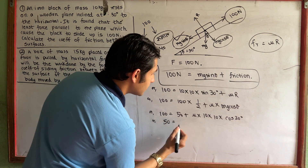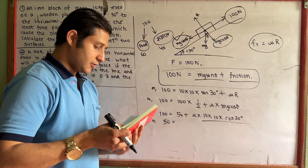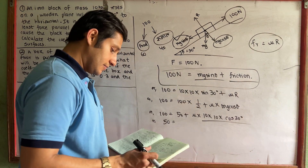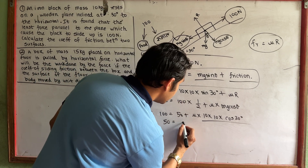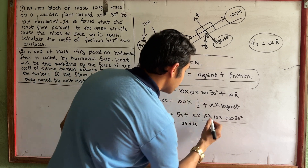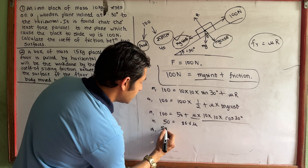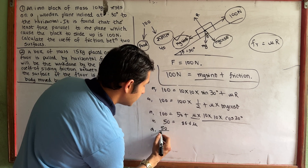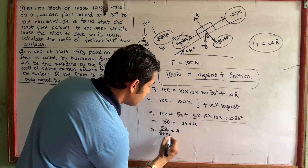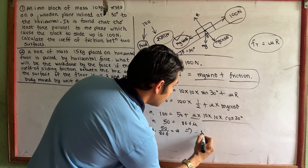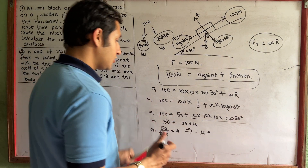So 50 is equal to mu into 86.6. Therefore mu equals 50 divided by 86.6, which gives us mu equal to 0.577.